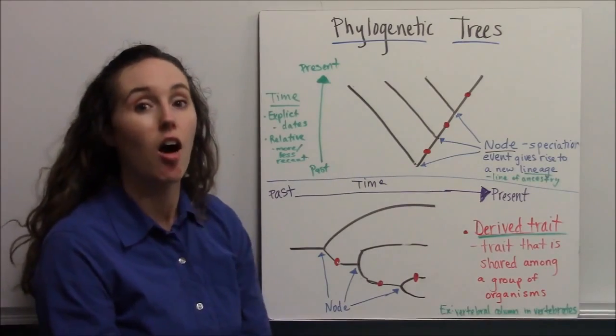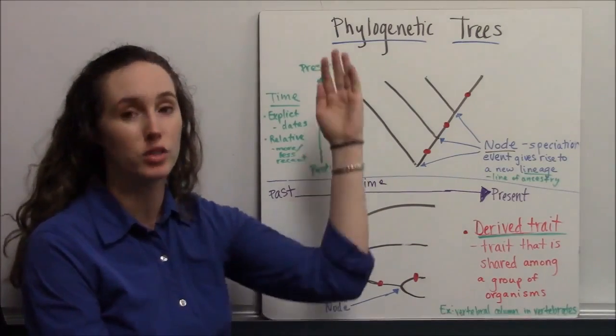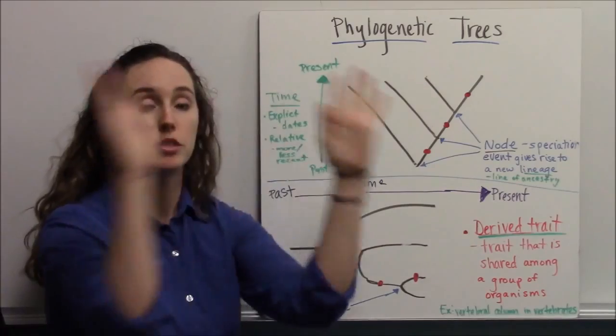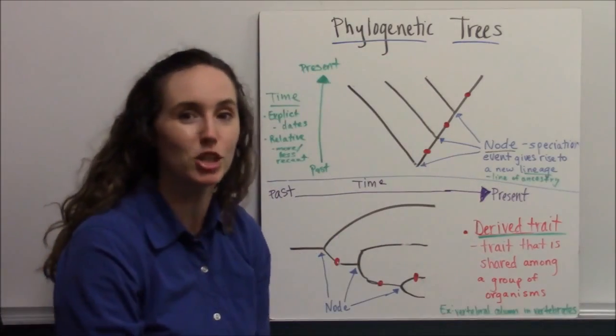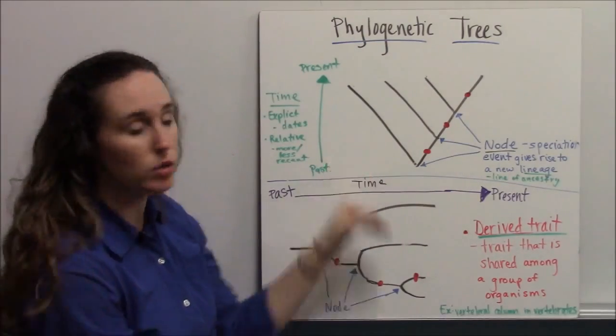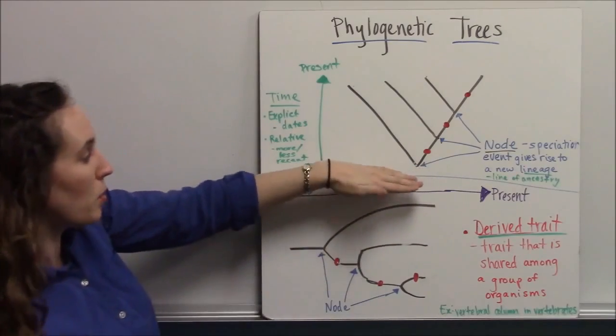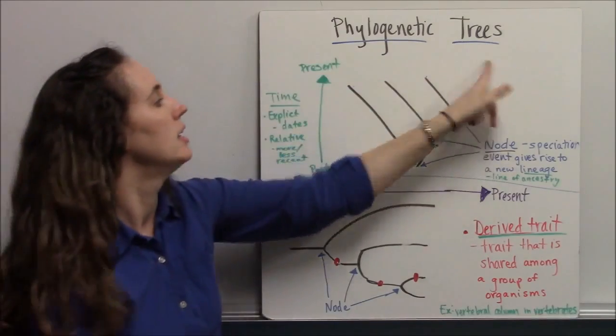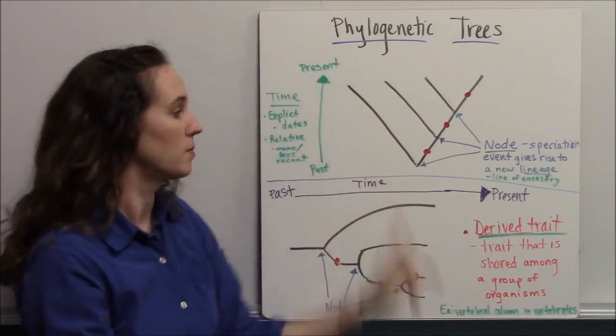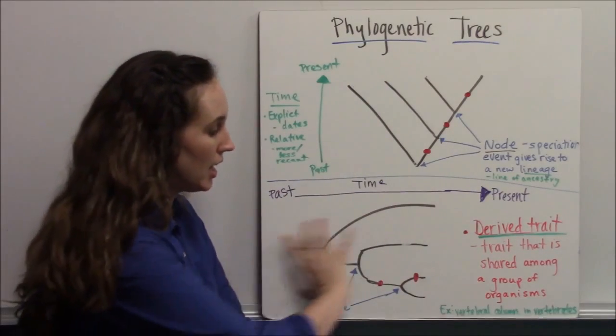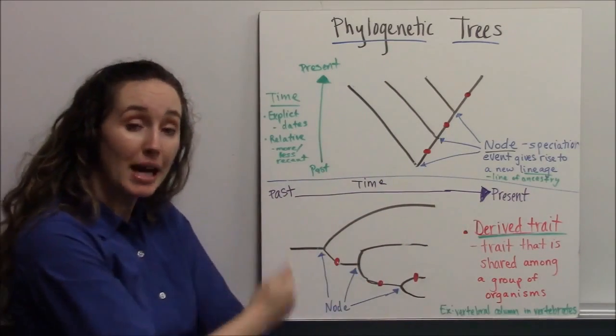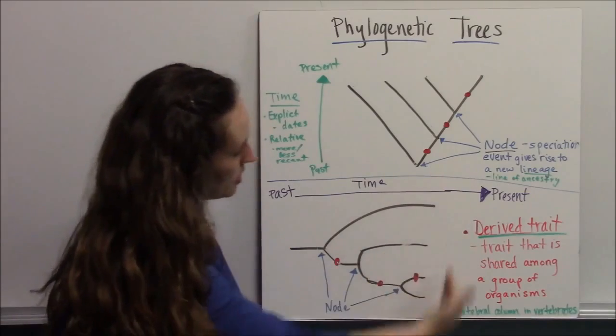Phylogenetic trees are a record over time of how organisms have speciated and branched into new kinds of organisms. Time travels from the base, this is the past, to the present, which is at each of the current tips. If you look at the tree this way, then the past is to the left, and the present is to the right.